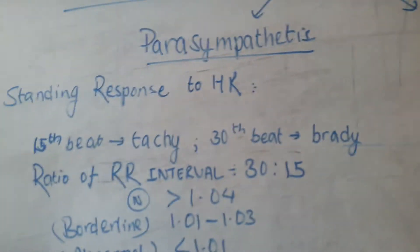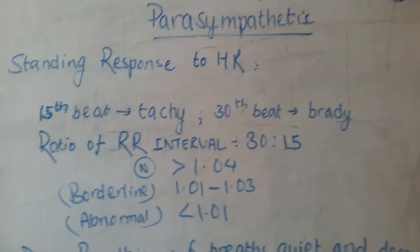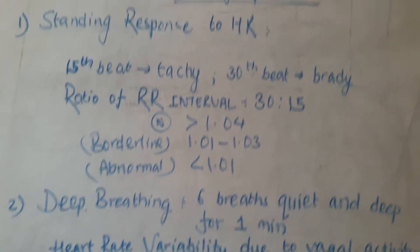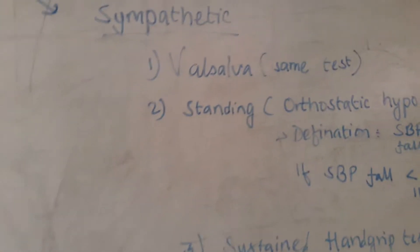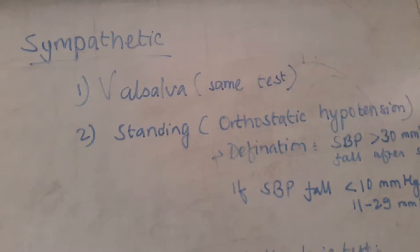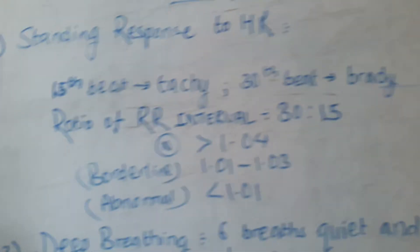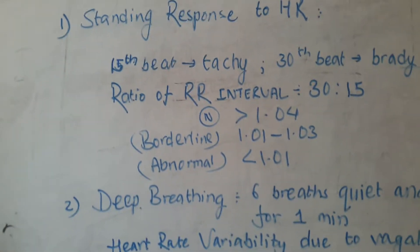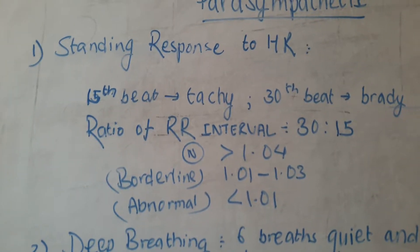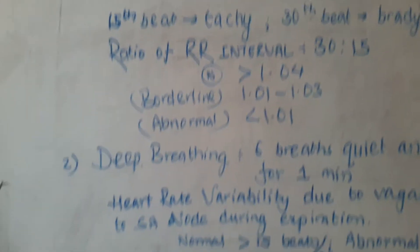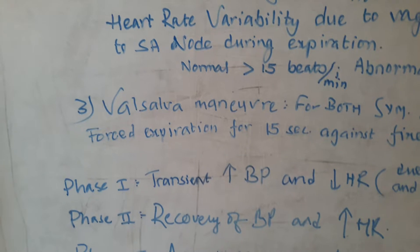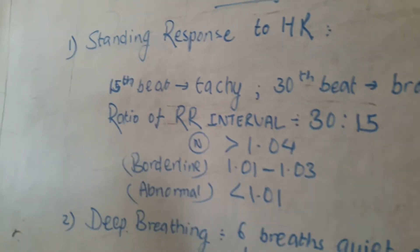There are parasympathetic tests and sympathetic tests. The parasympathetic test is basically related to heart rate, and the sympathetic test is basically related to blood pressure. In the parasympathetic test there are three different tests: one is the standing response to heart rate, the next is the deep breathing test, and the third is the Valsalva maneuver.